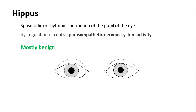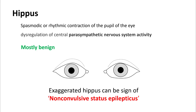Hippus is the spasmodic or rhythmic contraction of the pupil. It occurs due to dysregulation of central parasympathetic nervous system activity and is mostly benign. However, exaggerated hippus can be a sign of non-convulsive status epilepticus.